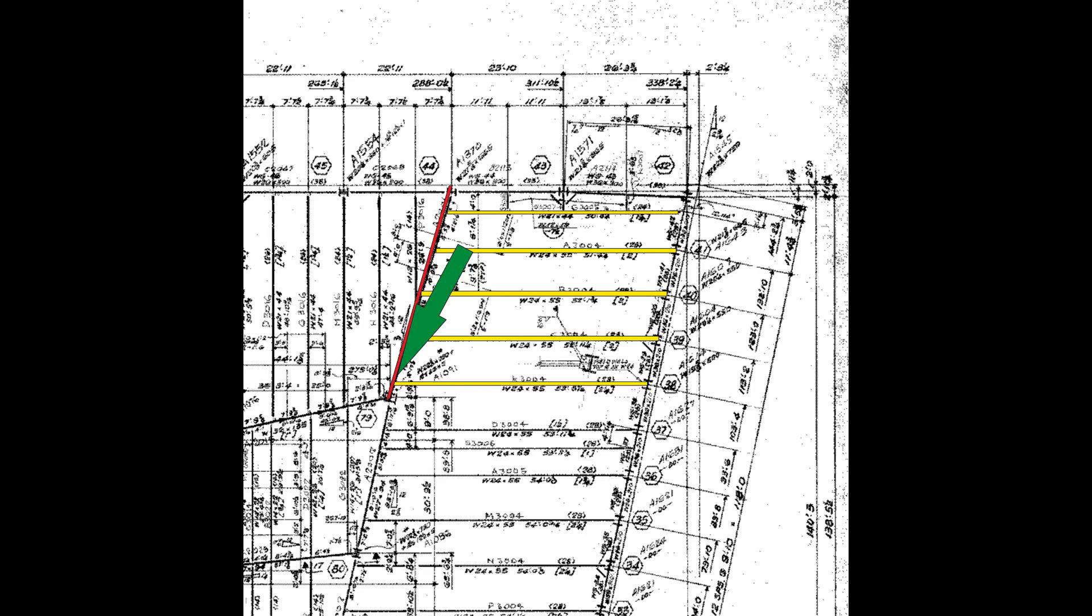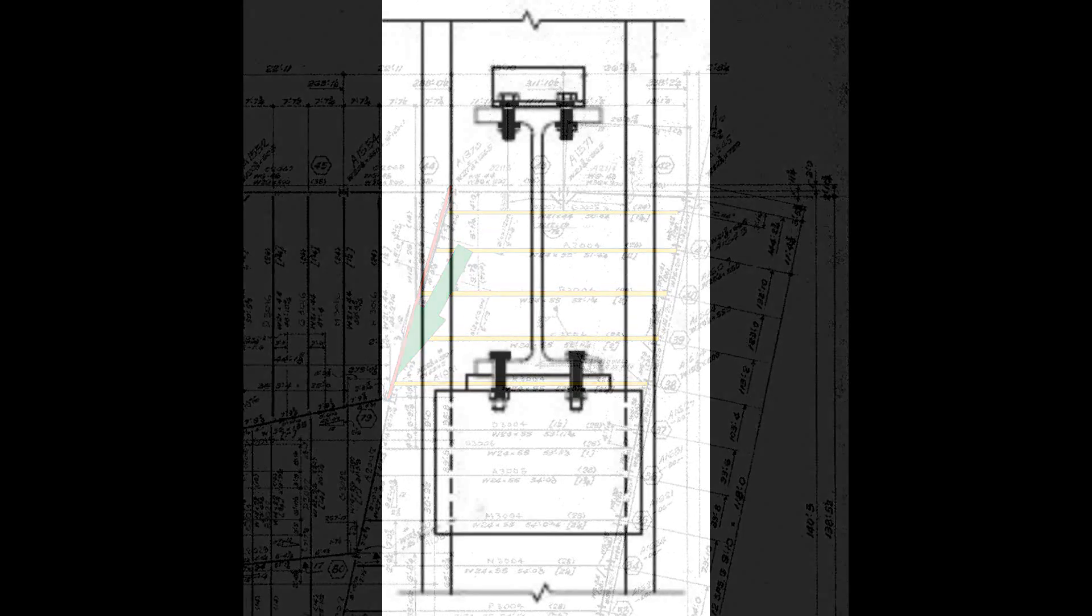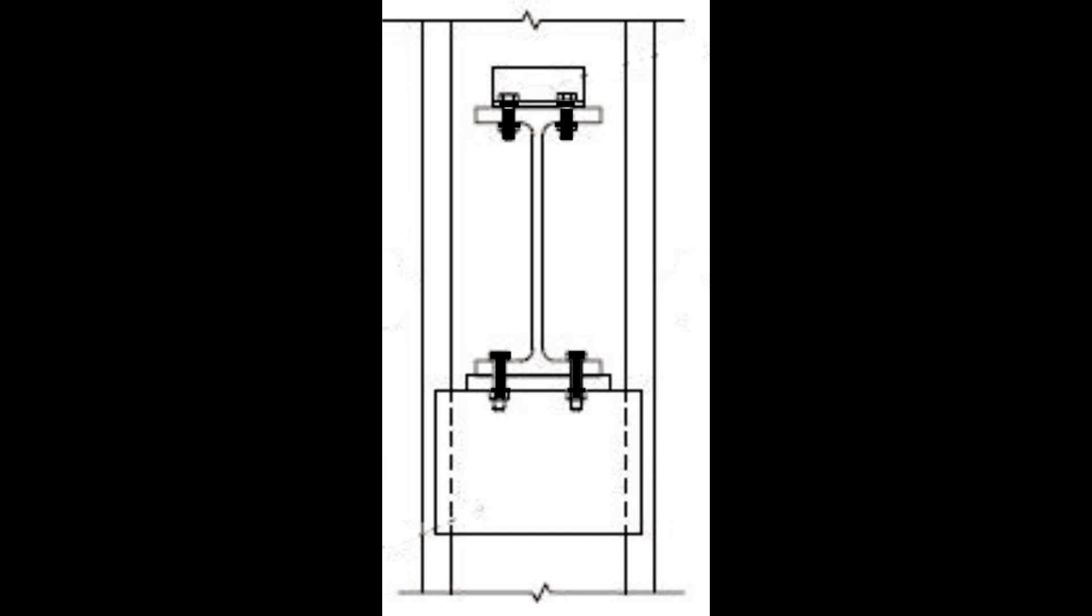So what we need to find out is how they represented this connection and was this connection indeed vulnerable to the type of failure that they supposed. And they look at first glance to have done a reasonable job until you look at the drawings and realize that they missed out two stiffener plates which should have been on the girder. And as you will see, to omit these plates has huge consequences for their story.